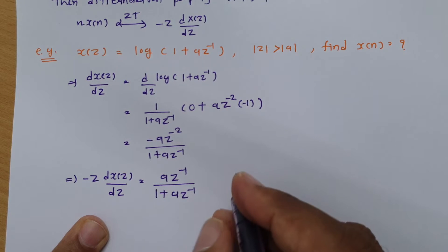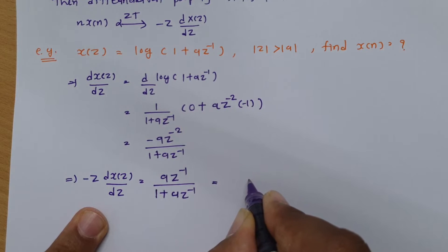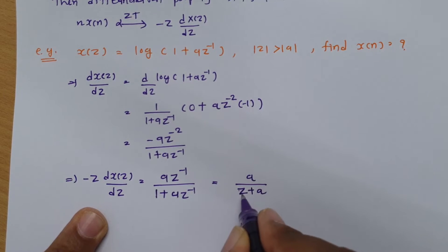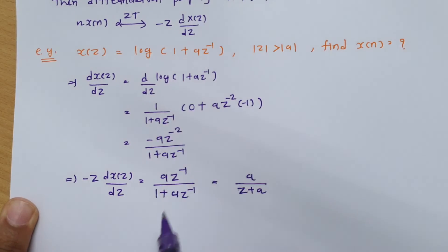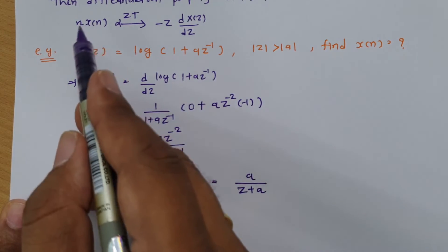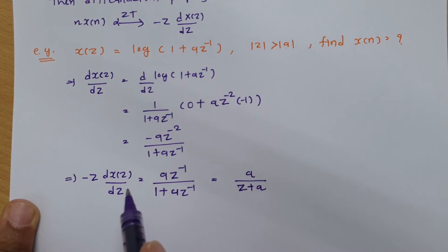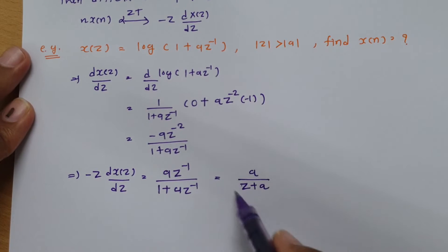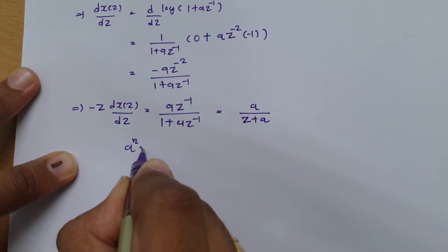So -Z·dX(z)/dz = A/(Z + A). If we know the inverse Z-transform of this form directly, we can proceed, but we don't have a basic formula for A/(Z + A). We do know the Z-transform pair: A^n·u(n) ↔ Z/(Z - A).